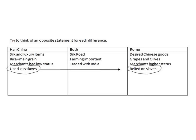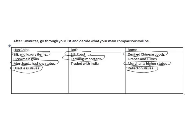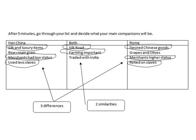Now I want to write an essay that plays to my strong side, so I'm going to pick the comparisons that are easiest for me to write about. For my three differences I picked: silk as the luxury item, merchants being held at a higher or lower status, and the use of slaves. For my similarities I picked that they were both on the Silk Road and that farming was an important part of their economy.